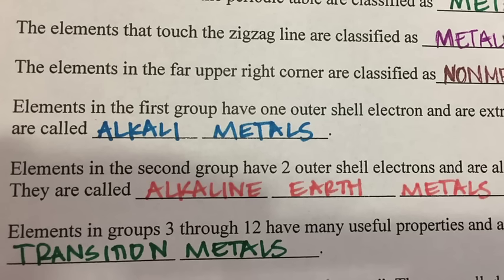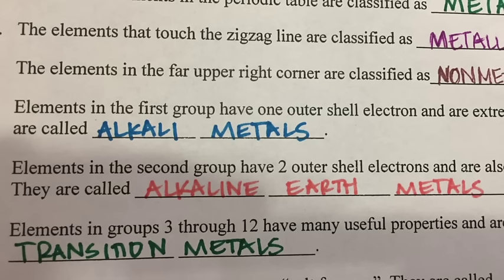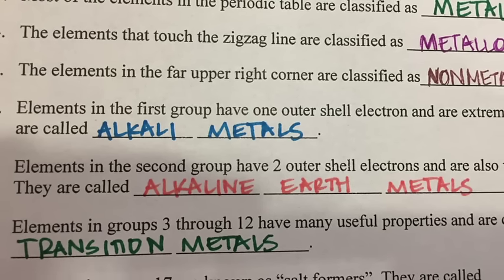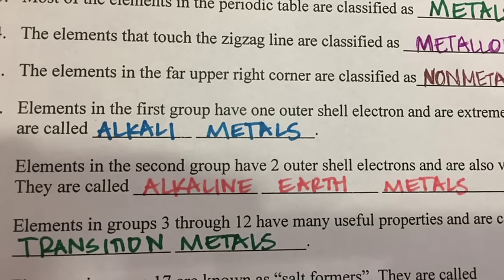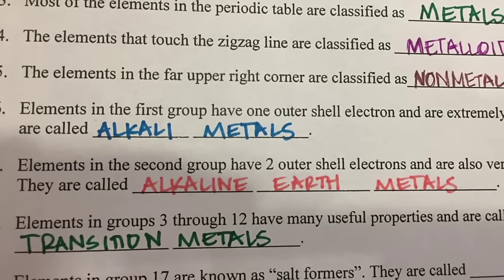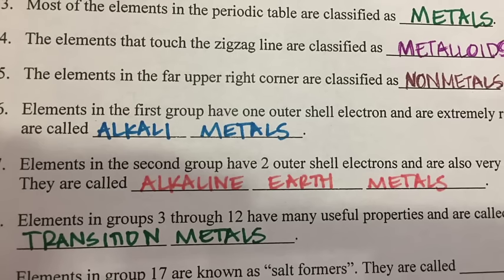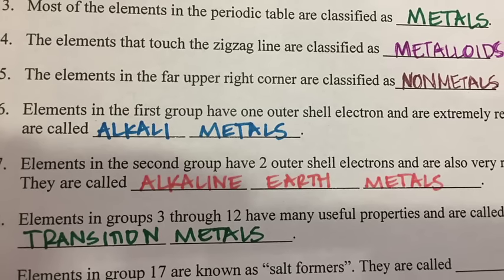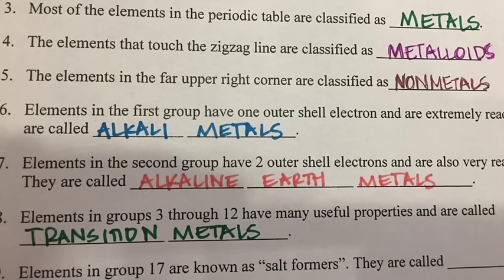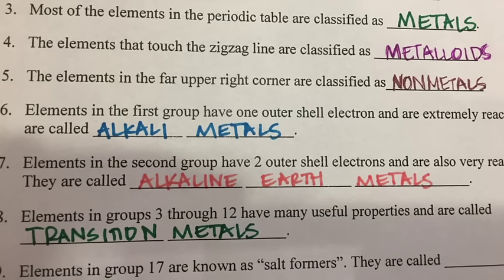The third main section of the periodic table is groups three through twelve, and these are called the transition metals. These metals have a moderate range of reactivity, a wide range of properties, and in general they are shiny, good conductors of heat and electricity, and they have higher densities and melting points than groups one and two. They are called transition metals because their electrons are more transitional — they have various numbers of valence electrons because they use more of those outer shells.